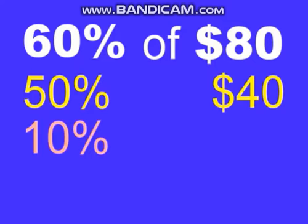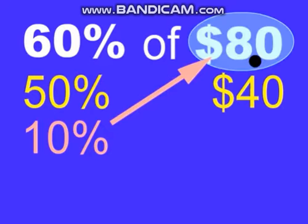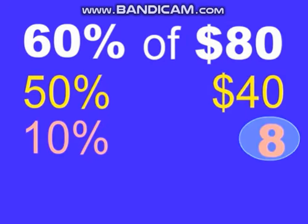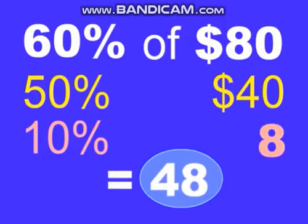Now, what's 10% of 80? Remember, to find 10% we just move our decimal one place to the left. So 80 becomes 8. 40 plus 8 equals 48 — and that's our answer!